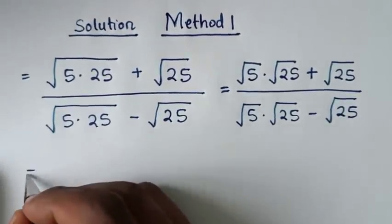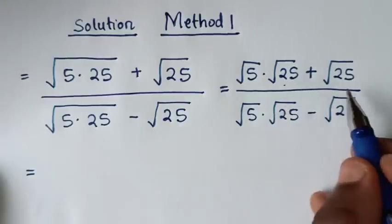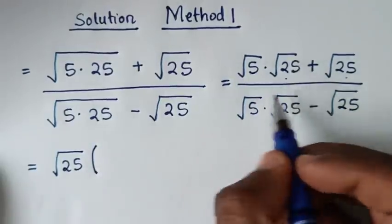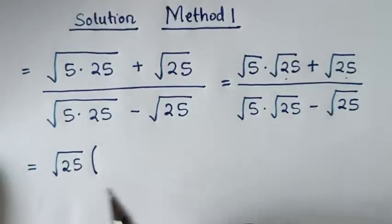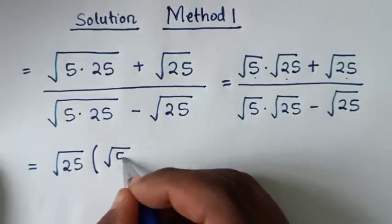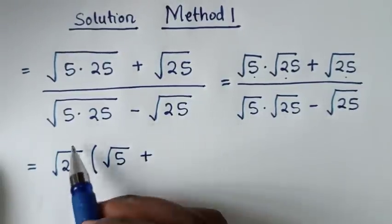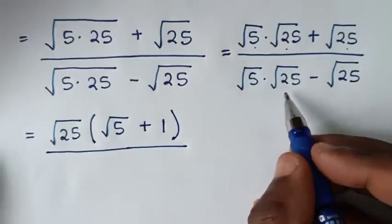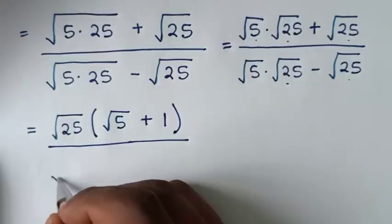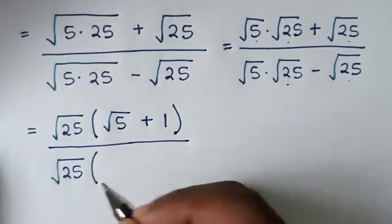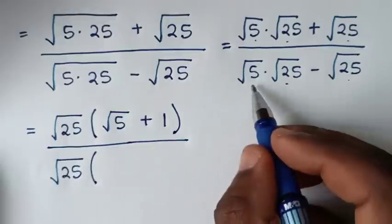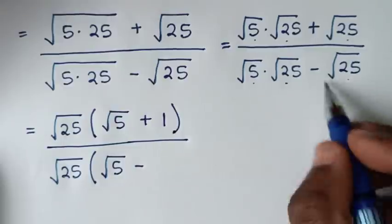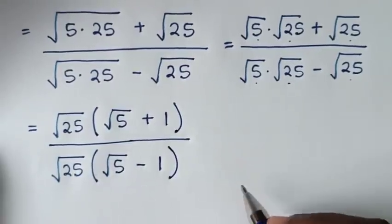In the next step, square root of 25 is common in both numerator and denominator, so we factor it out. This gives square root of 25 times (square root of 5 plus 1) over square root of 25 times (square root of 5 minus 1).